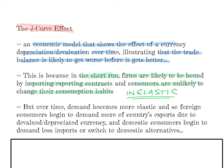Over time, in the long run, demand becomes more elastic. Foreign consumers begin to demand more of the country's exports due to the devalued or depreciated currency, and domestic consumers begin to demand fewer imports or switch to domestic alternatives. So the J-curve effect claims that in the short run, a depreciation or devaluation won't improve the current account deficit — it will make it worse — but over time, as demand becomes more elastic, both foreign and domestic consumers begin to respond.